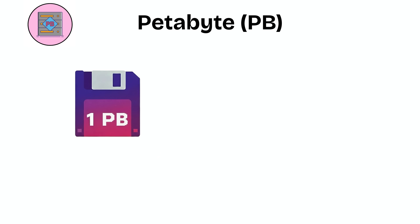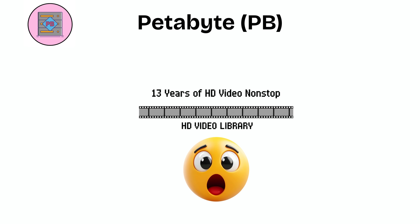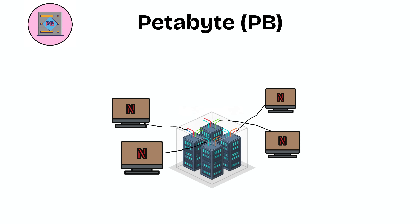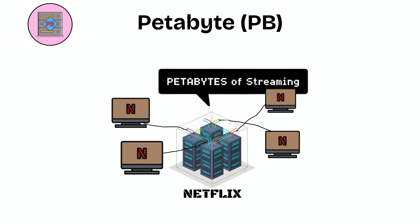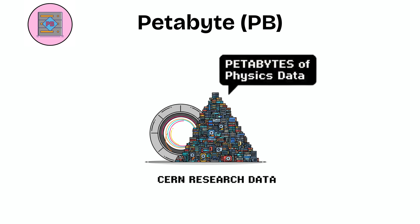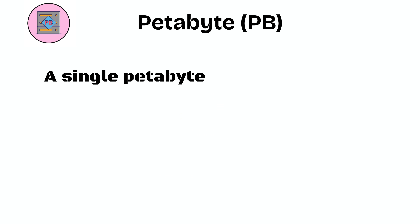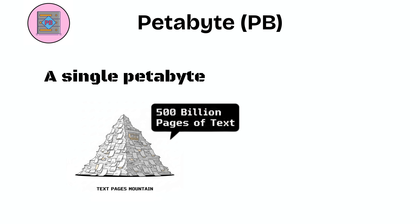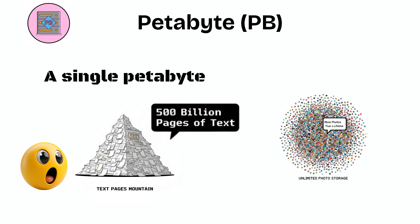Petabyte (PB). A petabyte equals 1,024 terabytes, or a quadrillion bytes. That's enough to hold 13 years of non-stop HD video. Companies like Netflix manage petabytes of video for streaming, while research centers like CERN store particle physics data in petabytes. A single petabyte could hold 500 billion pages of text, or more photos than you could ever take in a lifetime.